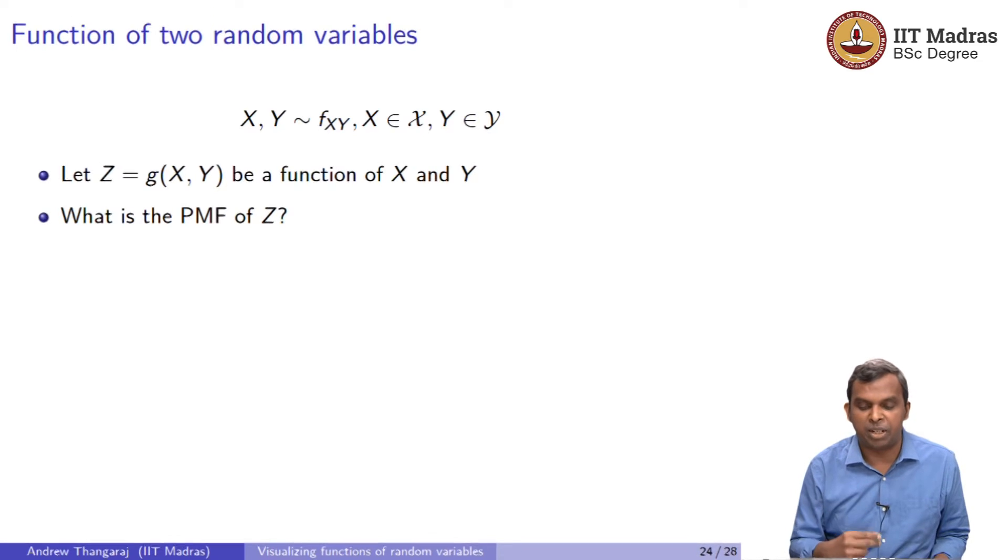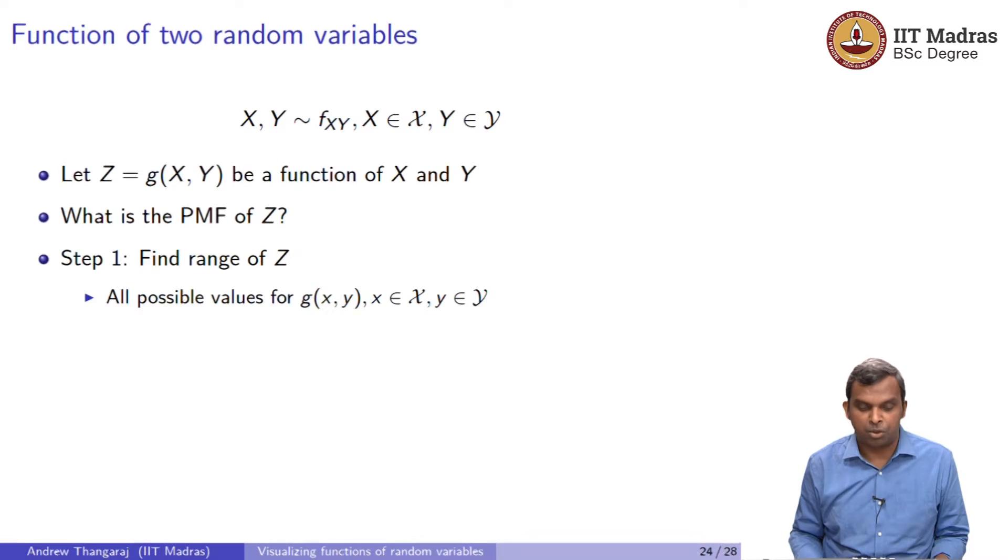Here is the general idea. Let us begin with the general idea and then we will apply it in a few cases to illustrate how it works. So, you have two random variables. There is a joint PMF that is given to you and you have a function g of x, y. How do you find the PMF of Z?